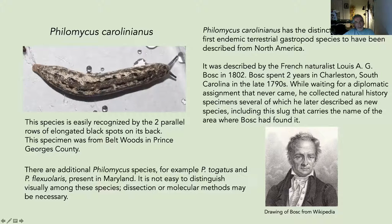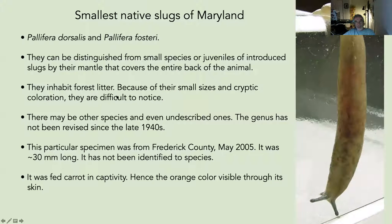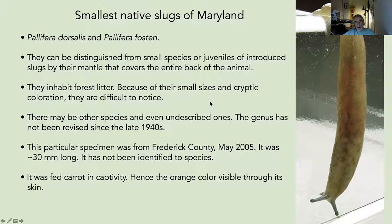There are at least two other Philomycus species present in Maryland — Philomycus togatus and flexuolaris — which in my opinion are difficult to tell apart even with dissection. The smallest native slugs of Maryland are in the genus Pallifera: Pallifera dorsalis and Pallifera fosteri. They live in forests but are difficult to see because they are small and have cryptic coloration. The genus has not been revised since the late 1940s and there may be undescribed species.